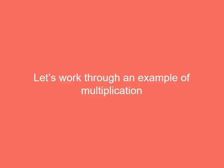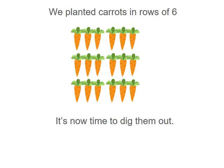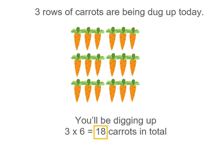Let's work through an example now with multiplication. We planted carrots in rows of six. It's now time to dig them out. Three rows of carrots are being dug up today, so you'll be digging up three groups of six. Three multiplied by six equals 18, so multiplication helps us with that one.